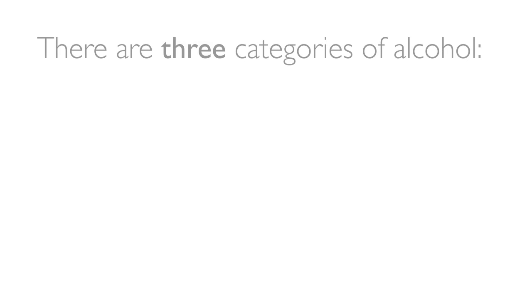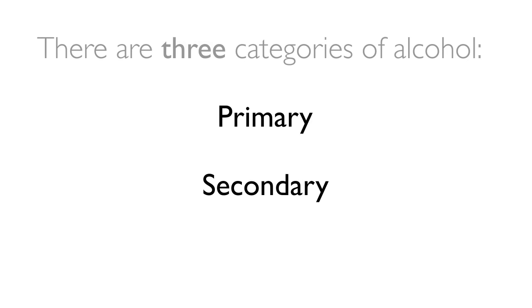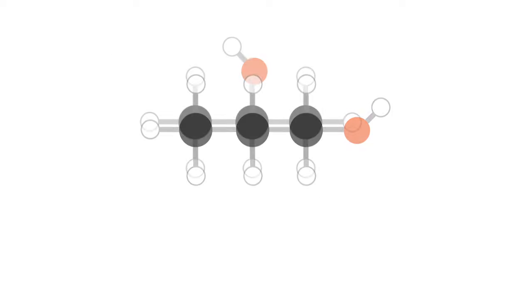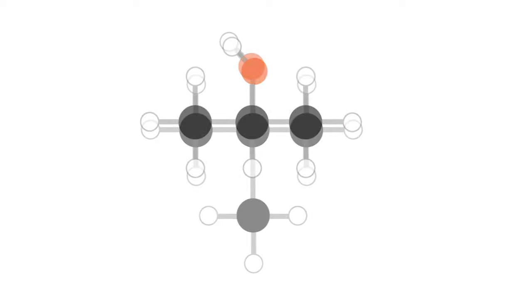Alcohols are placed in one of three categories — primary, secondary or tertiary — based on the position of the OH on the chain.